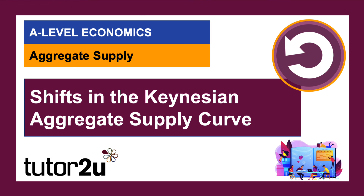So there we go — some shifts in the Keynesian aggregate supply curve. Hopefully you found this useful. If you did, please press like and subscribe. Stay happy, stay positive. See you sometime soon.